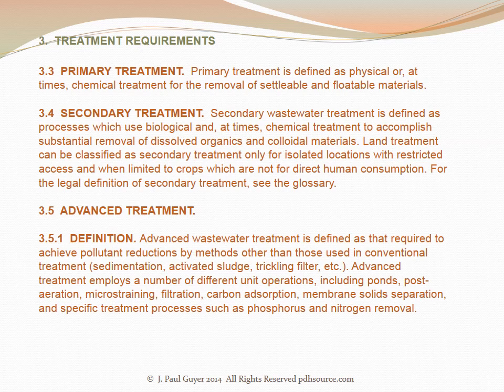Primary treatment is defined as physical or at times chemical treatment for the removal of settleable and floatable materials. Secondary treatment is defined as processes which use biological and at times chemical treatment to accomplish substantial removal of dissolved organics and colloidal materials. Land treatment can be classified as secondary treatment only for isolated locations with restricted access and when limited to crops which are not for direct human consumption. Advanced wastewater treatment is defined as that required to achieve pollutant levels by methods other than those used in conventional treatment — those being sedimentation, activated sludge, and trickling filter, for example.